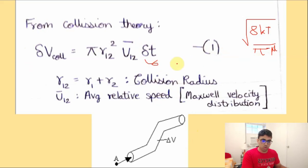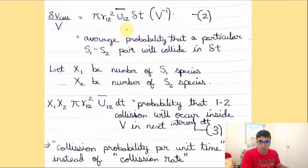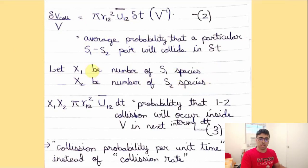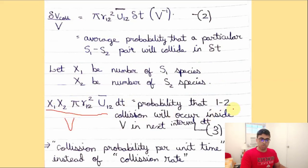When we divide both sides of Equation 1 by V, we get the average probability that a particular S1 and S2 pair will collide in the small time interval Δt. If we let X1 and X2 be the number of S1 and S2 species respectively, multiplying X1 and X2 into this probability gives the probability that any S1–S2 pair will collide inside volume V in the next small interval dt — Equation 3.